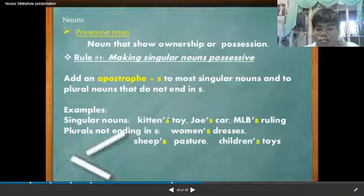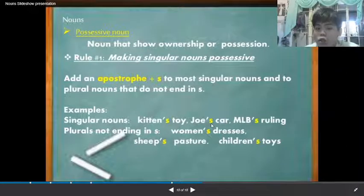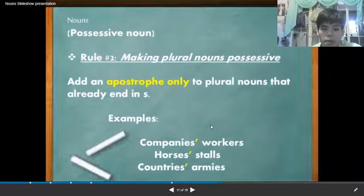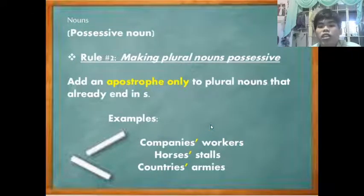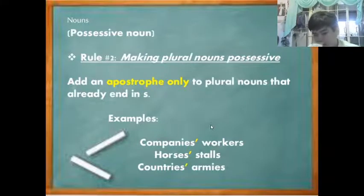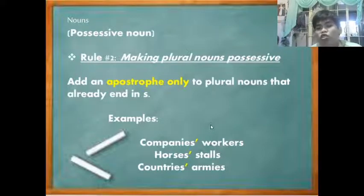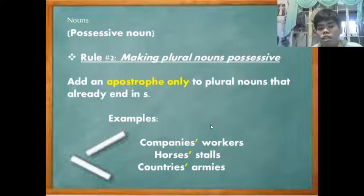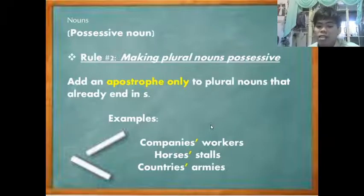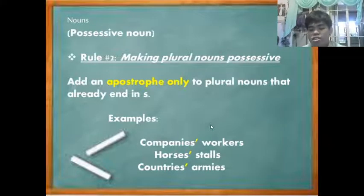The toy is the kitten's; the car is Joe's, and so on. The second rule is about plural nouns. If the word already ends in 's', you do not need to add an additional 's' — you just put an apostrophe at the end. For example: companies', courses', and countries'.